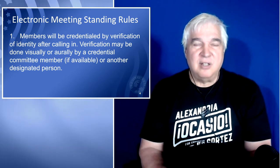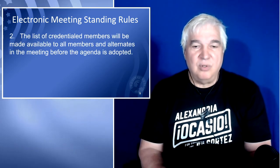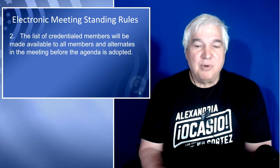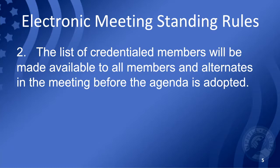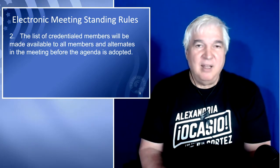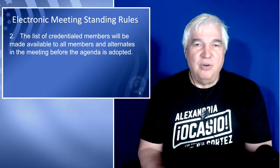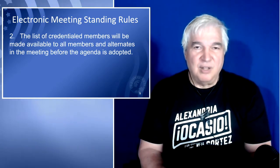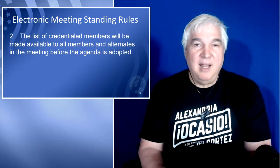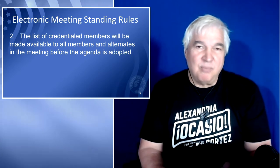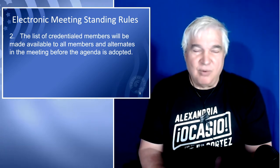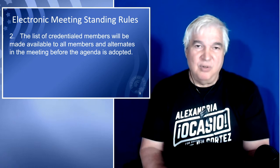The next rule is that the list of credentialed members will be made available to all members and alternates in the meeting before the agenda is adopted. This is so it is clear to everyone participating who is voting in the meeting, and this is important in an electronic meeting because you can't look around a room and see who is there.